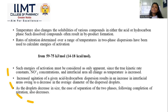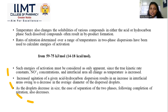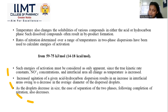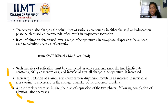Temperature also changes the solubility of various hydrocarbons and can sometimes produce undesirable by-products. Over a range of temperatures, two-phase dispersions have been used to calculate the energy of activation from 59 to 75 kJ/mol. This energy of activation must be considered only apparent, since the true kinetic rate constant, NO2+ concentration, and interfacial areas all change as temperature increases. As droplet size decreases with increased agitation, the ease of separation between the two phases also decreases.